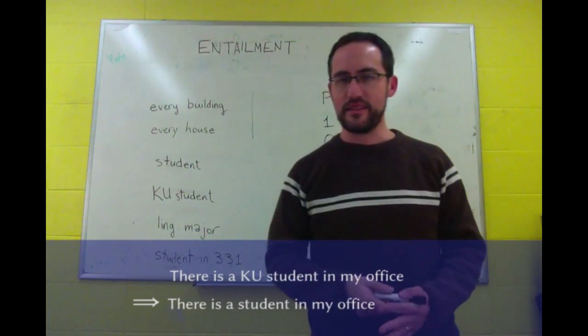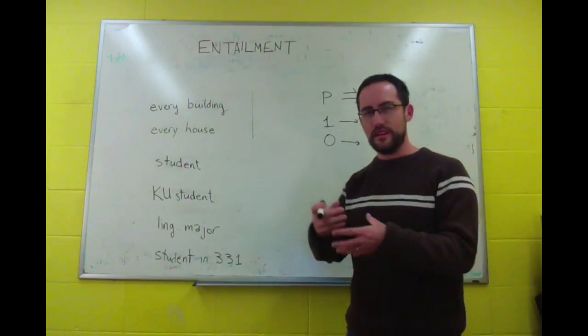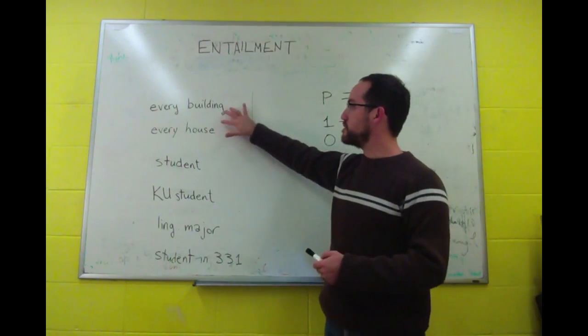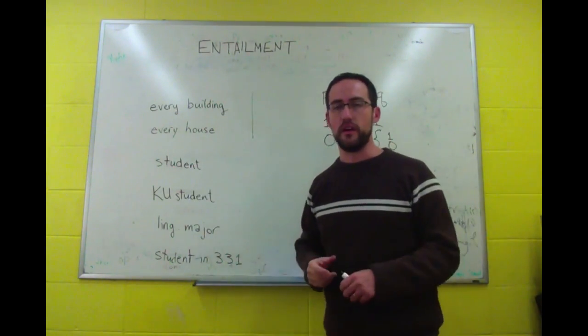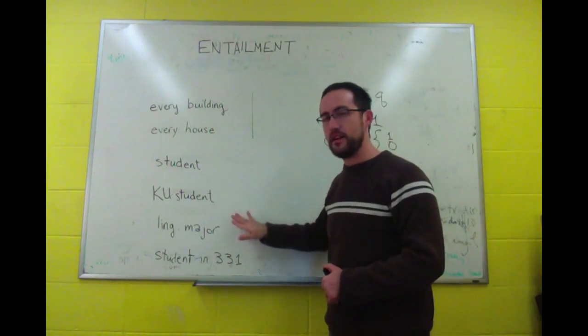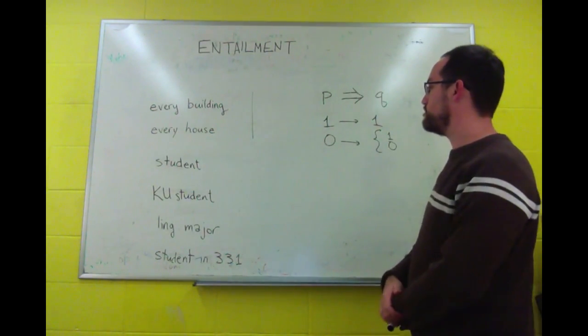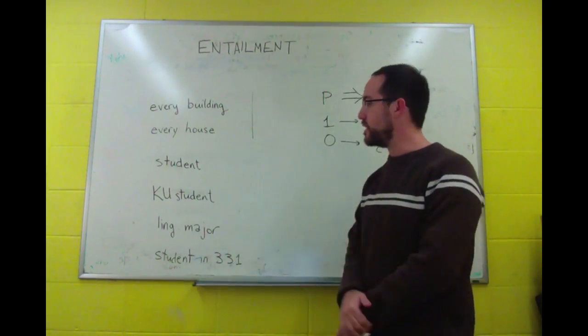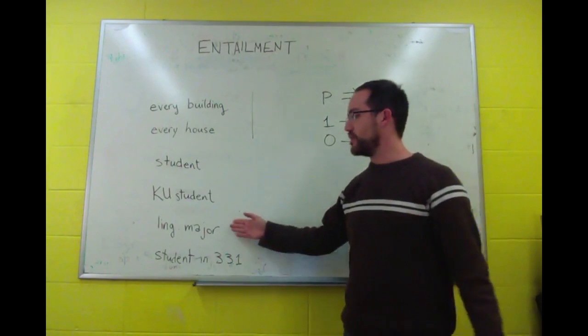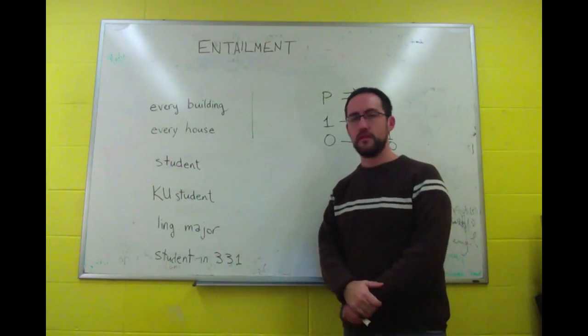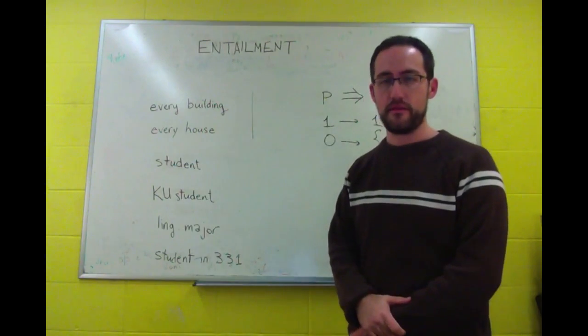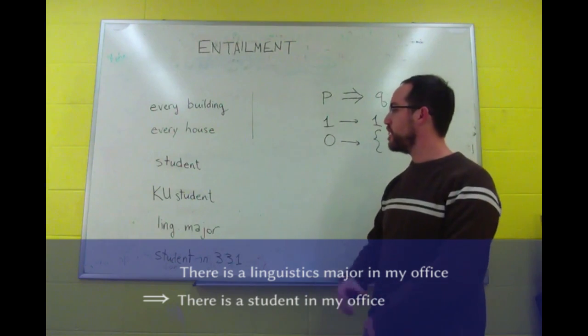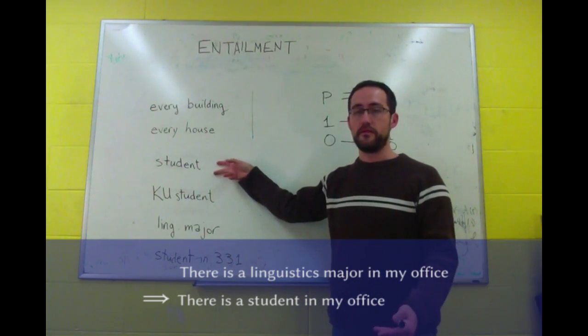Now, notice in both of these cases, I say that one is a kind of another. And you can think of words as pseudo-entailing one another when one is a kind of another. So, a linguistics major is a kind of student, or a kind of KU student. So if I say there is a linguistics major in my office, that entails that there is a KU student in my office, and that entails that there is a student in my office.